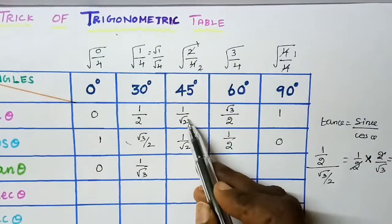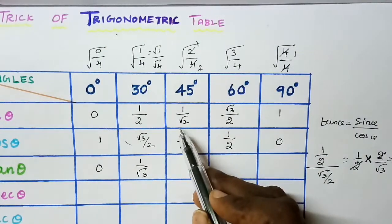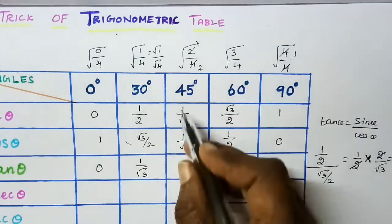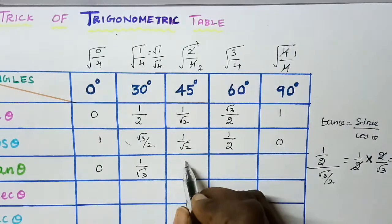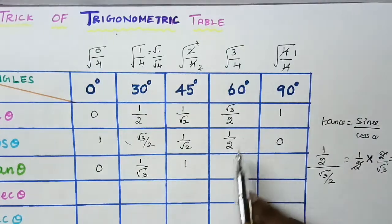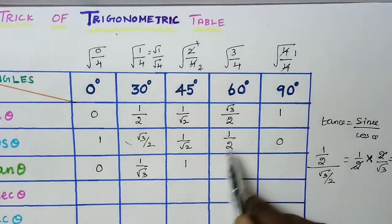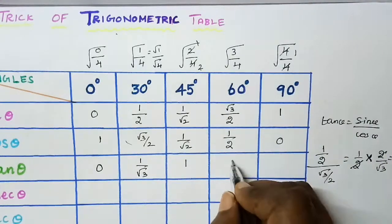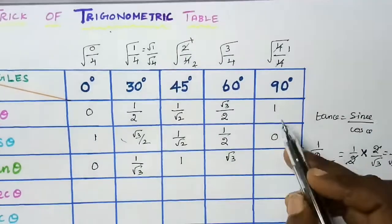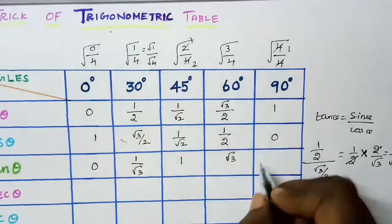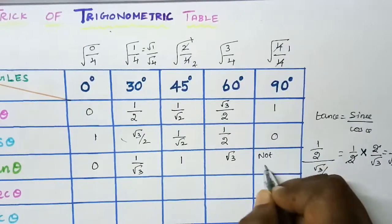Next, for 45 degree: the denominator is root 2 in both sin and cos, so root 2 and root 2 cancel, giving 1 by 1 which is 1. For 60 degree, the value is root 3. For 90 degree, we get 1 by 0, which is not defined. So write not defined.